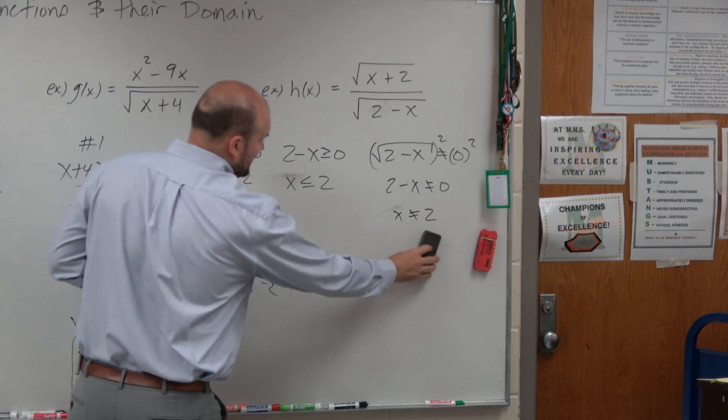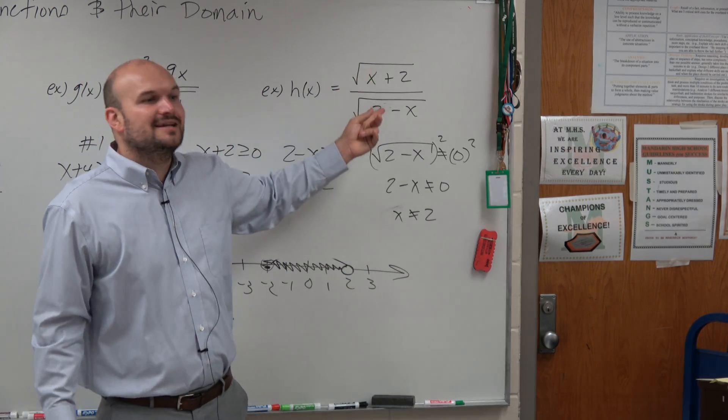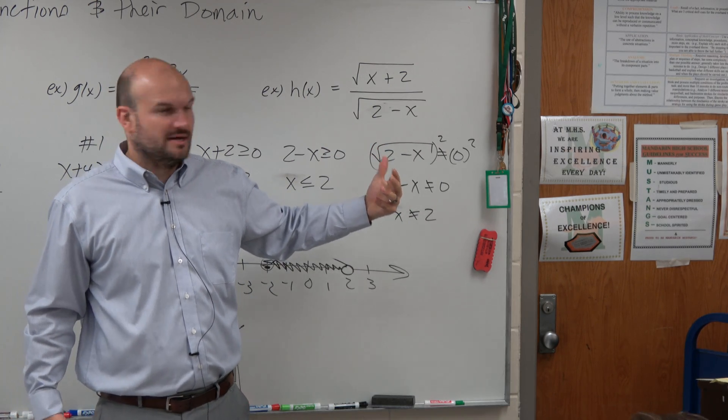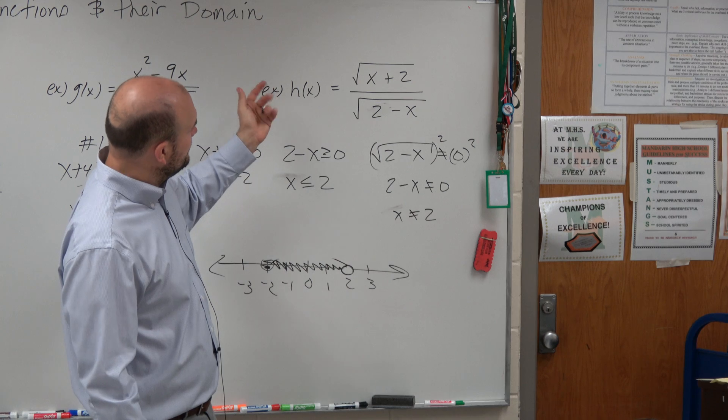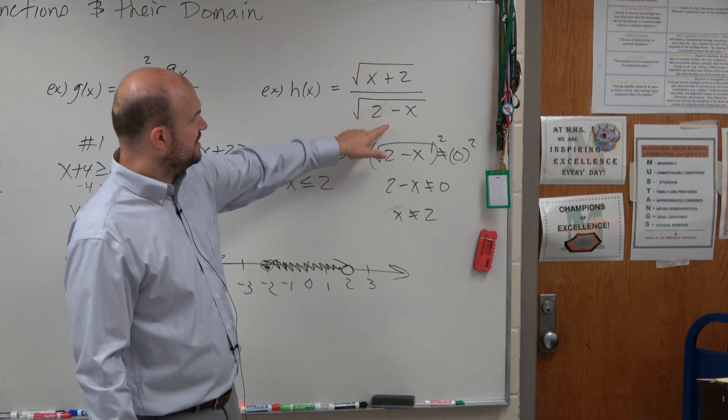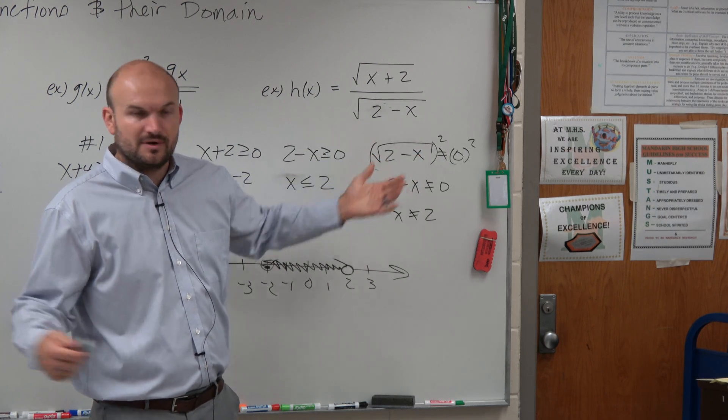Because you can't have one radical be true, not the other one be true. They both have to be true. Does that make sense? Right? You can't say, I don't know what number, let's see, I guess 3. 3 works for this, but it doesn't work for that. Well, it has to work for both of them, right?